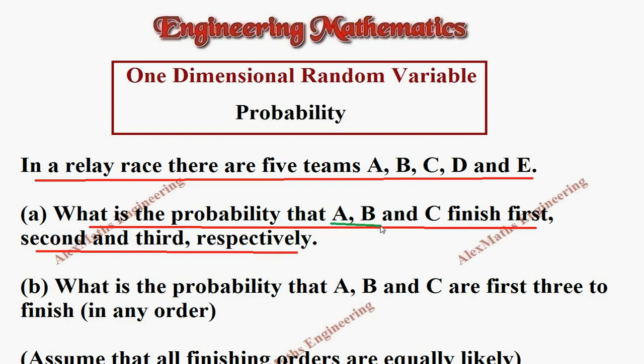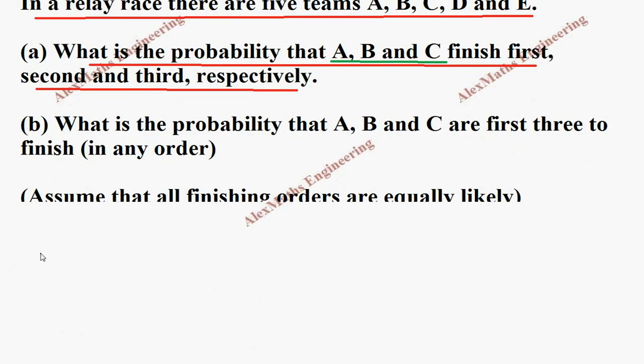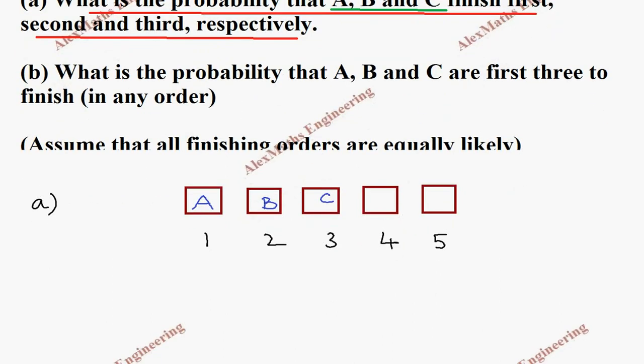The first subdivision has specifically given A, B and C in the first, second and third places. Coming to the solution, we take five places: first, second, third, fourth and fifth. As per the question, they say A in the first, B the second, C the third respectively. In these two places, in place four and five, there is a chance, either D or E.